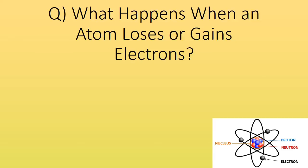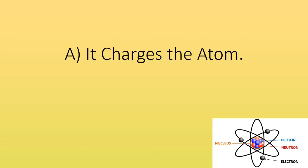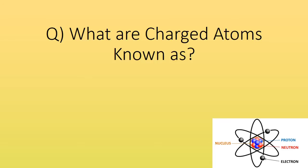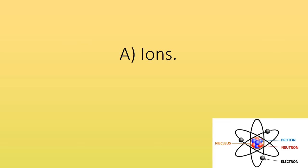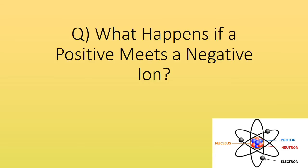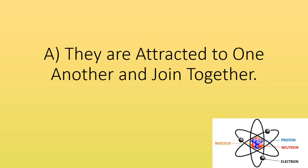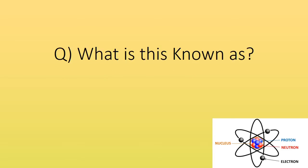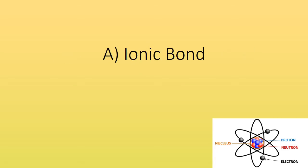What happens when an atom loses or gains electrons? It charges the atom. What are charged atoms known as? Ions. What happens if a positive meets a negative ion? They are attracted to one another and joined together. What is this known as? Ionic bond.